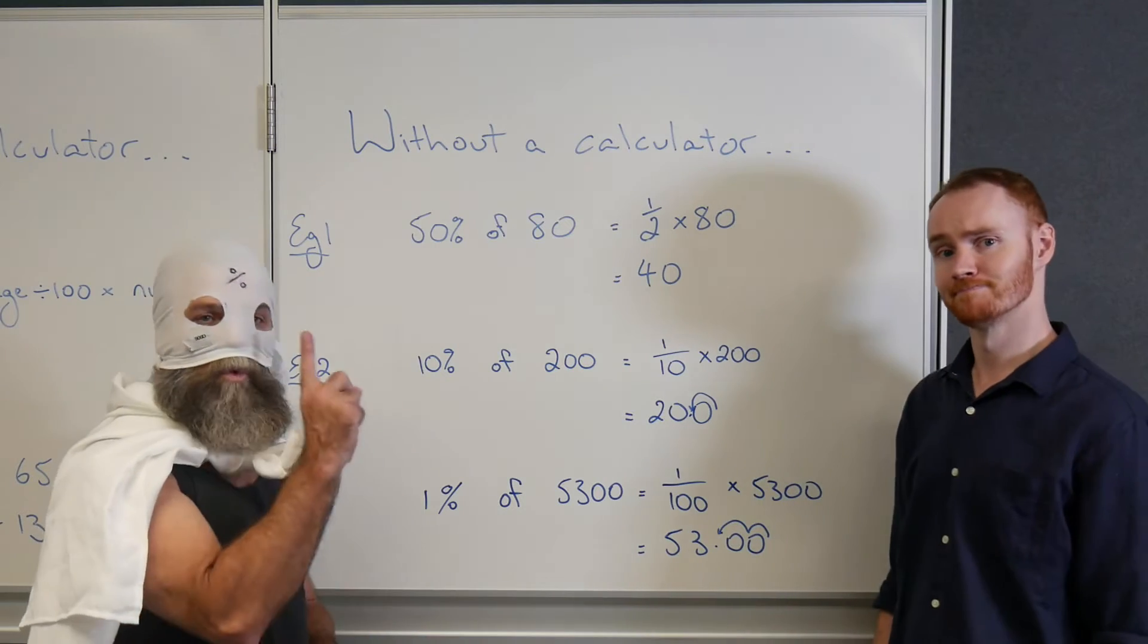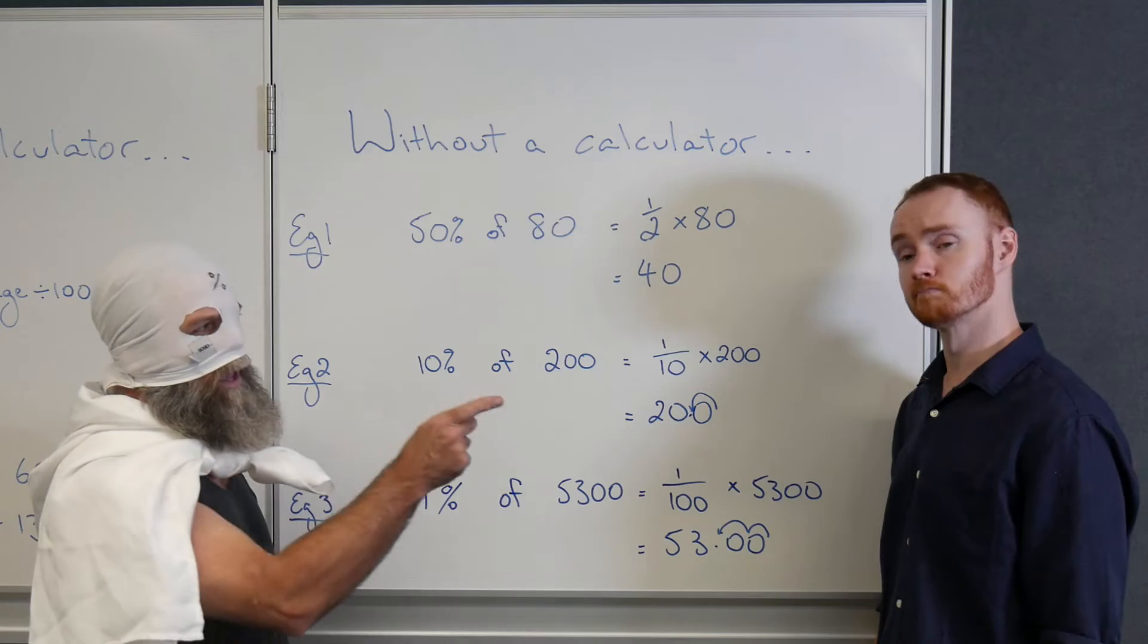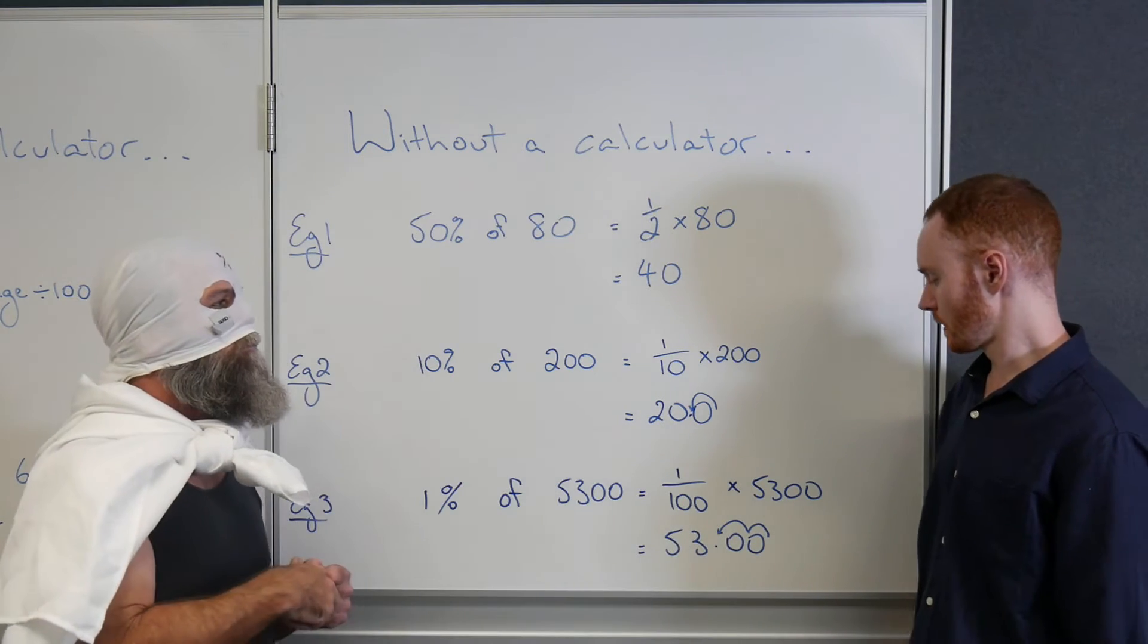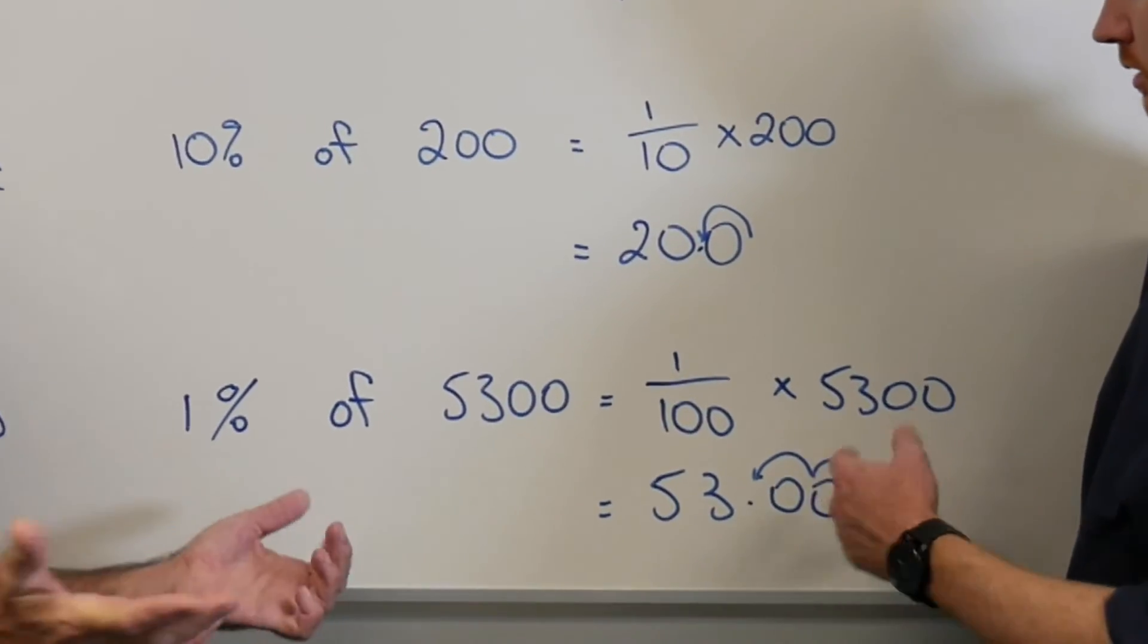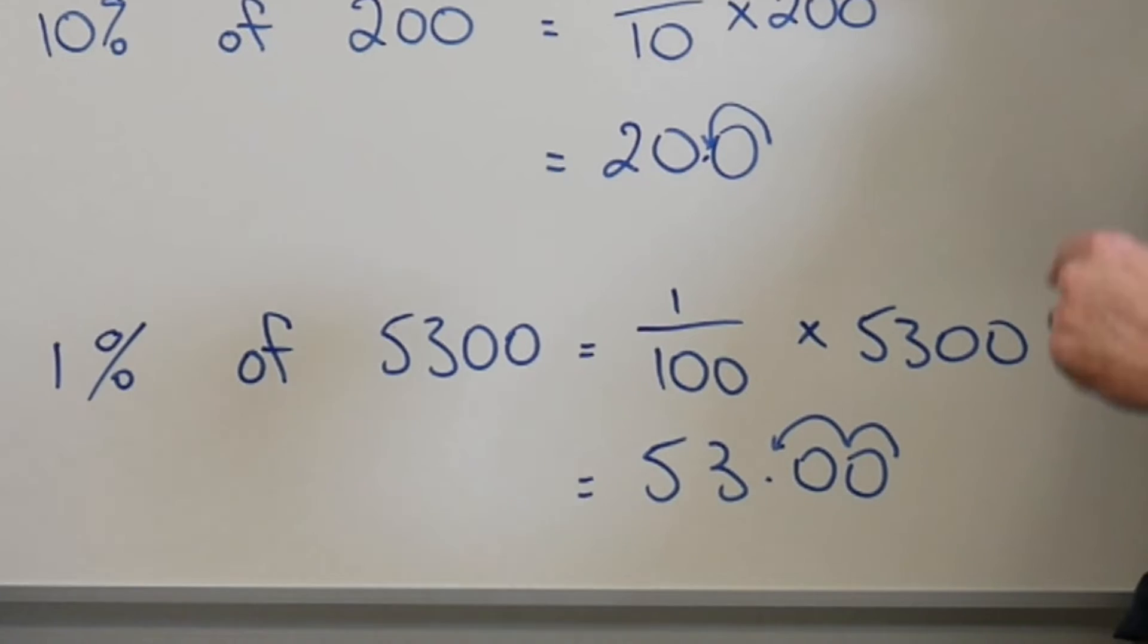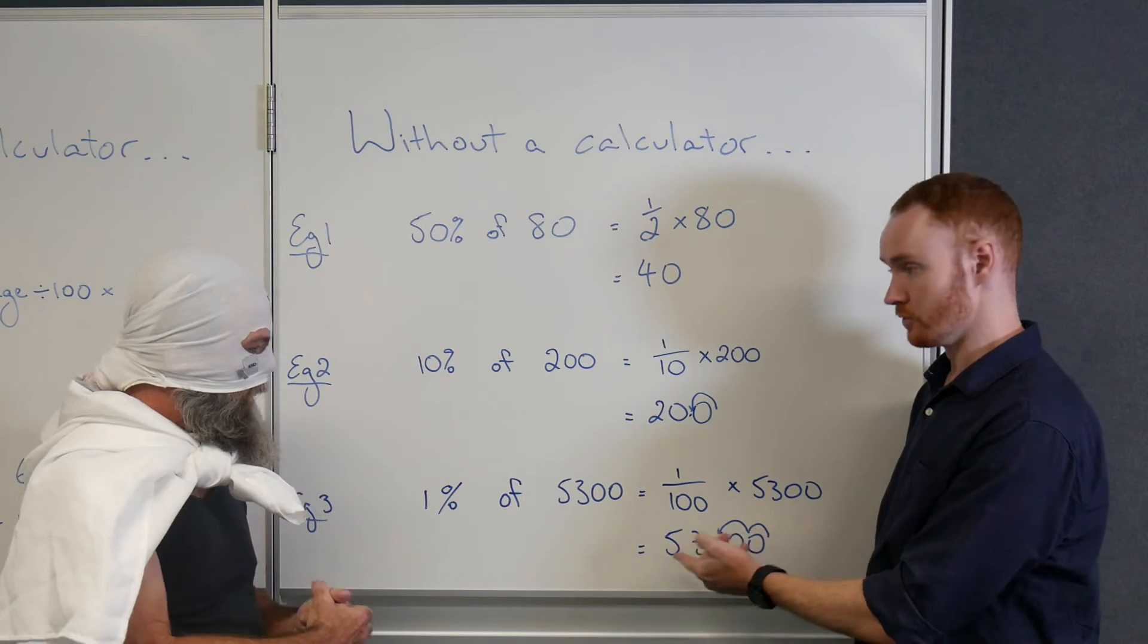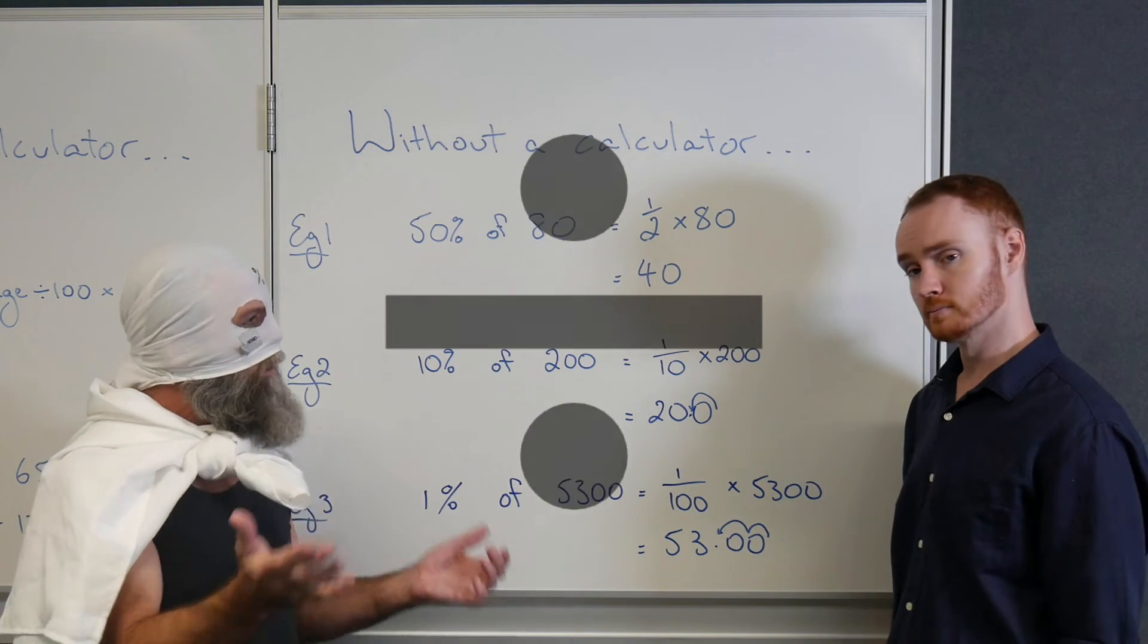Lucky last, 1%, sir. 1% is the same as 1 one-hundredth. So how do you think we will find 1 one-hundredth of that big number? So we're dividing 5,300 by 100. So that means we can grab that decimal place and make it do two jumps, because there's two zeros. Absolutely perfect. 53. So if we're doing 1% of something, we simply divide by 100.